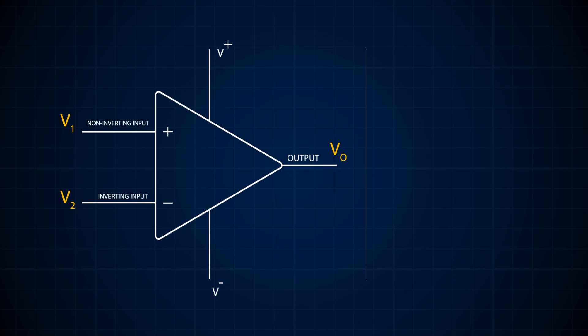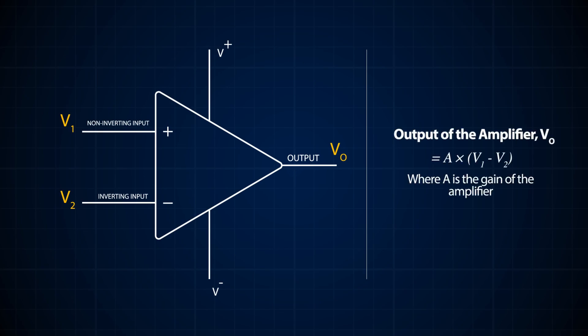As I mentioned previously, the amplifier takes a weaker signal and increases its magnitude. It does this by a factor, and this factor is what we call the gain of the amplifier. So for an amplifier with V1 and V2 as the two inputs, the output voltage will be A times V1 minus V2.